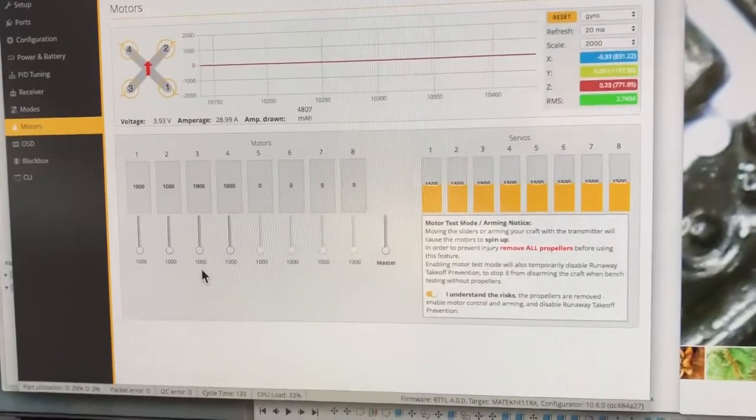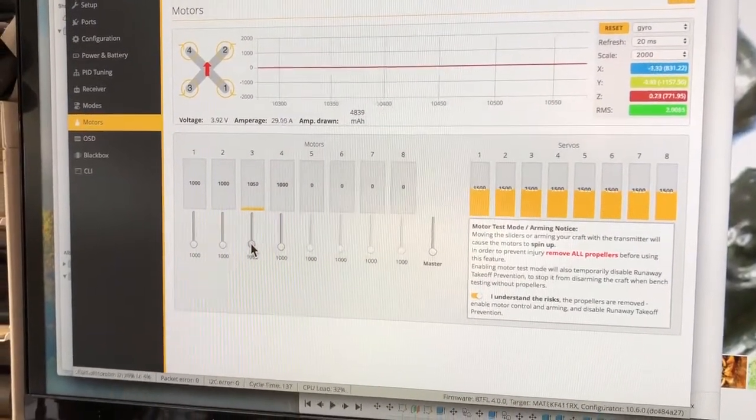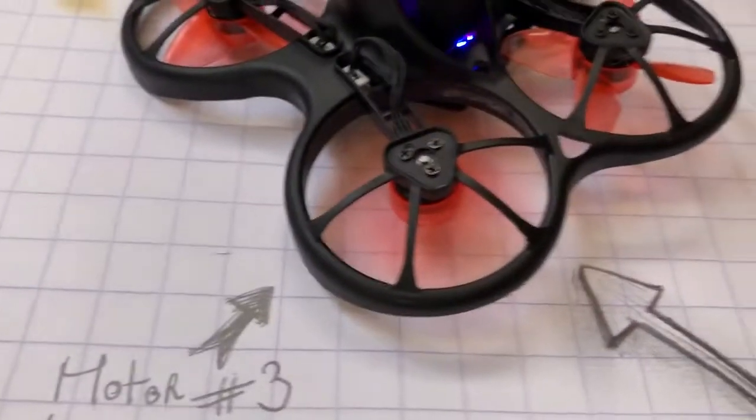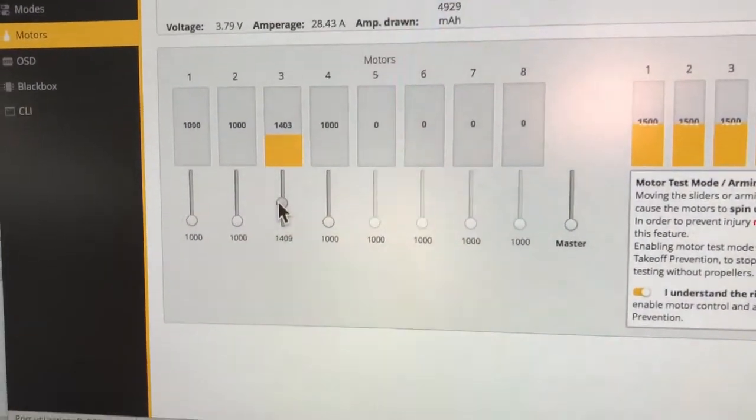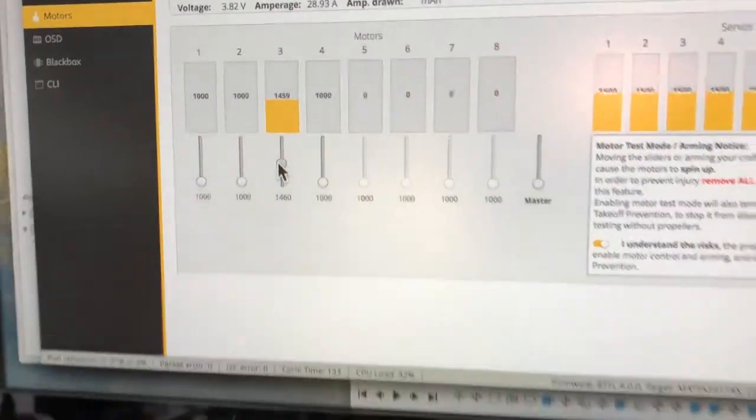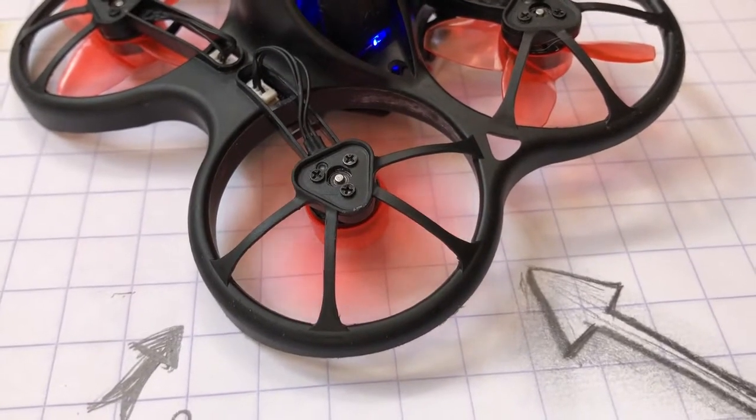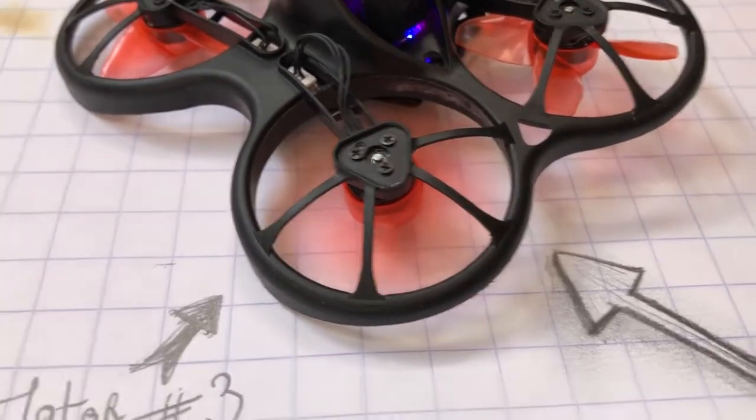It is right now connected to Betaflight. And as you can see here, I will increase the motor rate on motor 3, which is okay until 1400, but as soon as I pass over 1400, as you can hear, the motor starts and stops spinning all the time and the quad can't fly anymore.